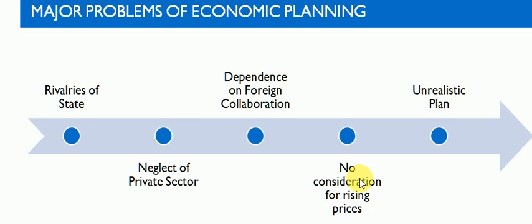After independence, India decided to go ahead in the development of industrial economy in a planned way. The planned progress has been slow and there are various causes which were responsible. There are several problems of economic planning.